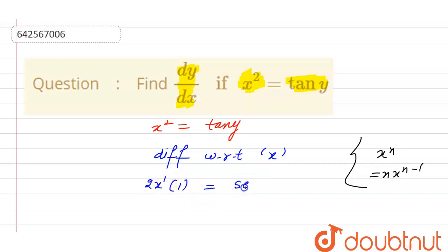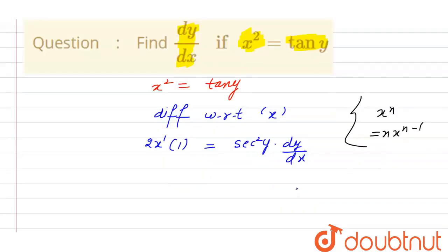Differentiation of tan theta is secant squared theta. Theta is y here, so we need to differentiate the value of y also. dy divided by dx.